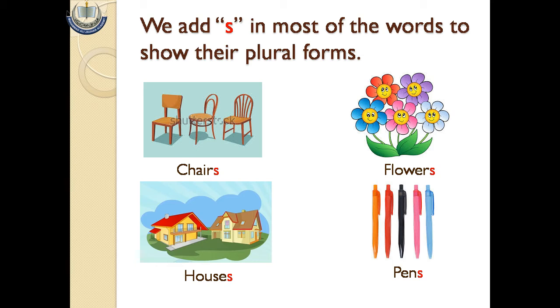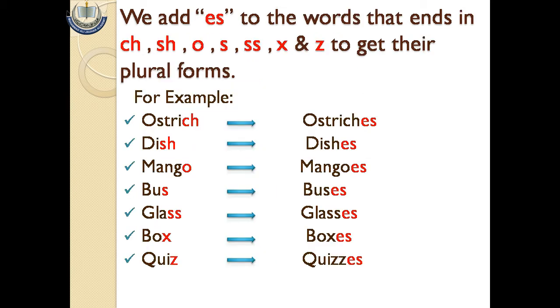Let's come to the next point. We add 'es' to the words that end in ch, sh, o, s, double s, x, and z to get their plural forms. Agar kisi word ke end mein yeh letters aa jayein to hum 'es' add kar ke un ki plural form banate hain.